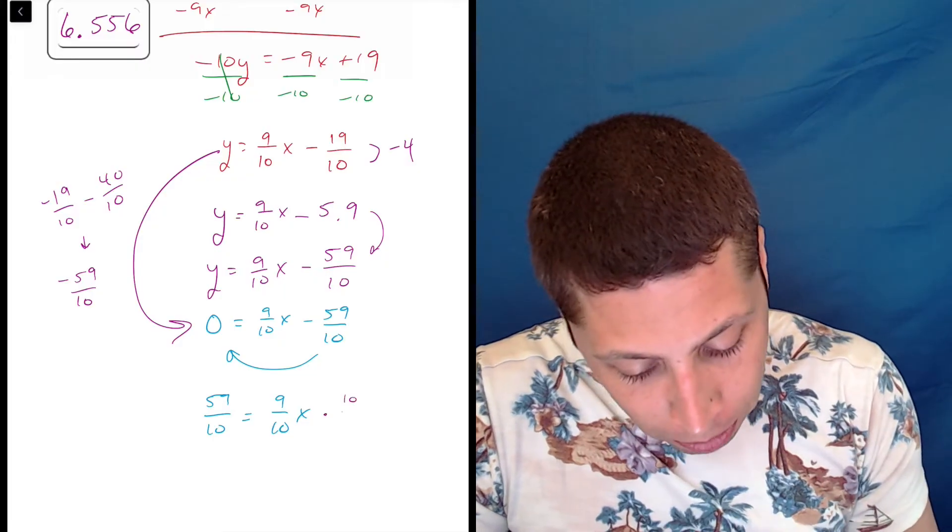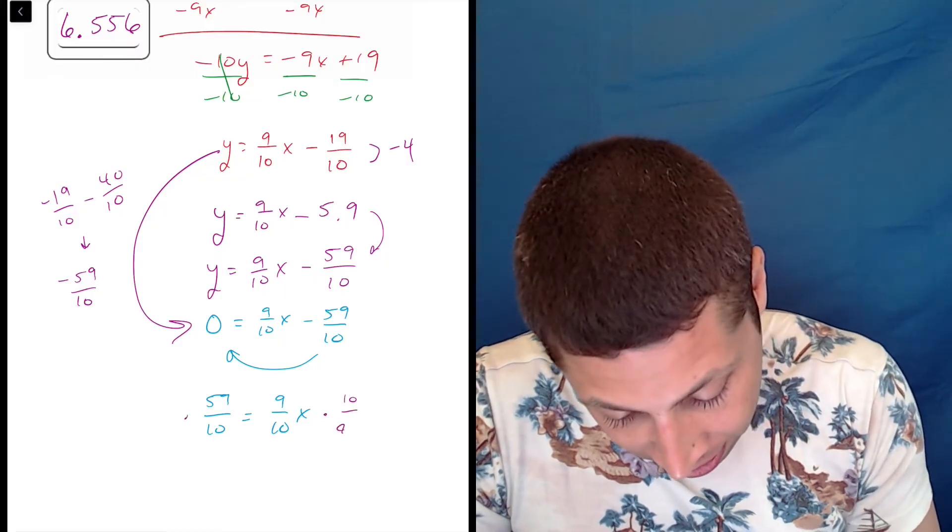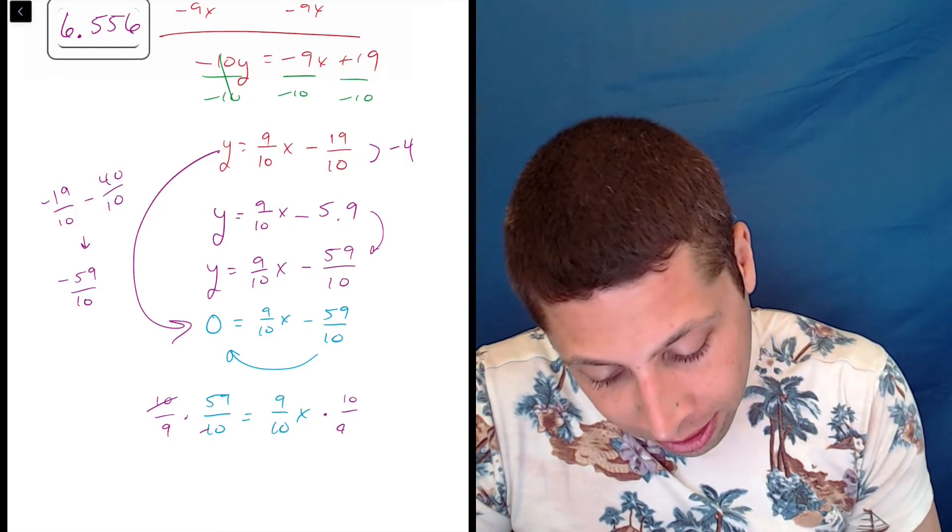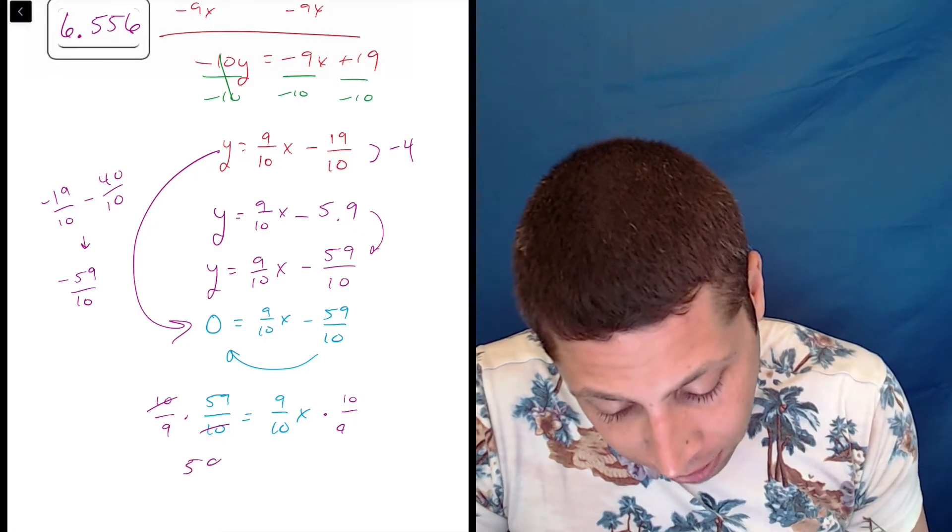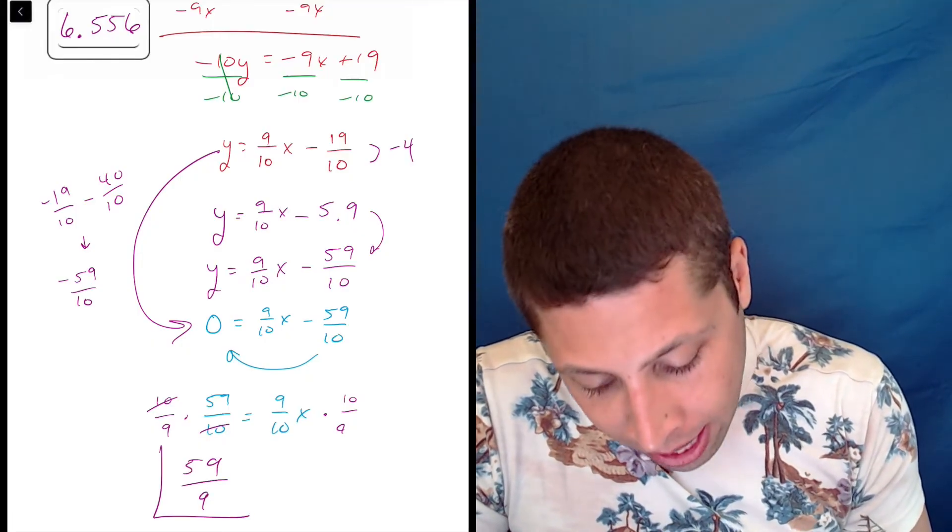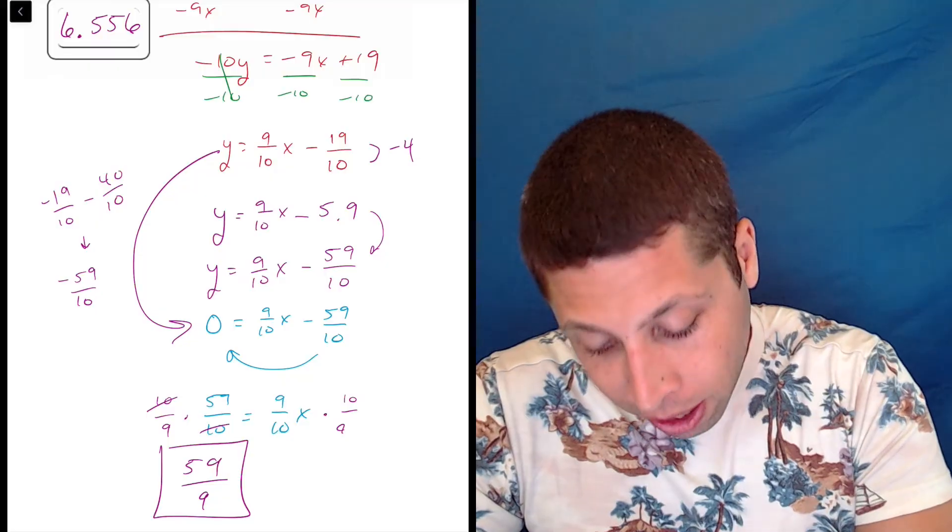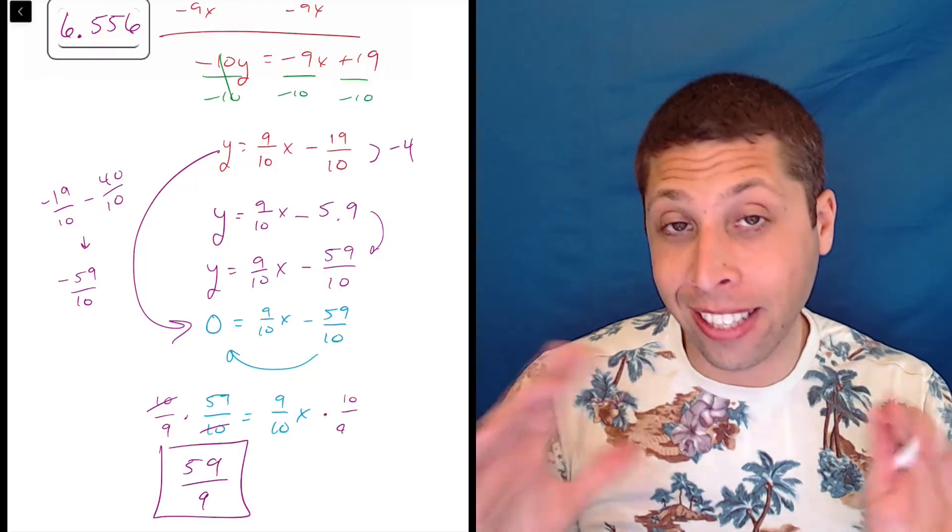And then we would solve by multiplying by 10 ninths on both sides. So the tens will cancel. And then 59 over 9 is another answer that we could put in that spot. And it's nicer to me because it's kind of simpler.